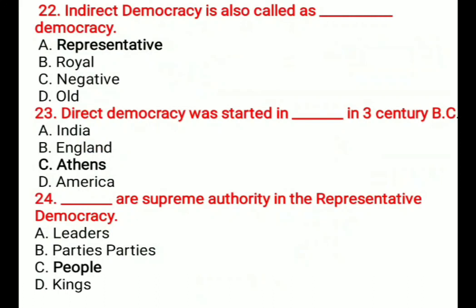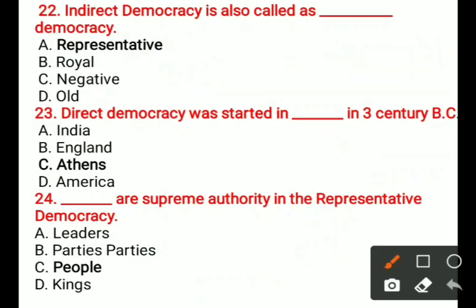Question 22: Indirect democracy is also called — A) Representative, B) Royal, C) Negative, D) Old. The correct answer is A, Representative. Indirect democracy is also known as representative democracy.